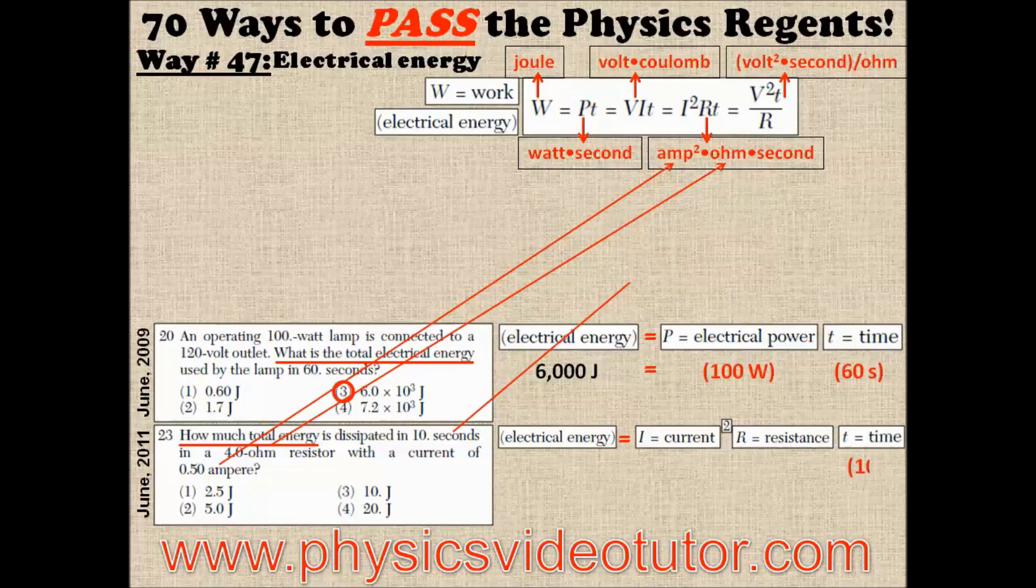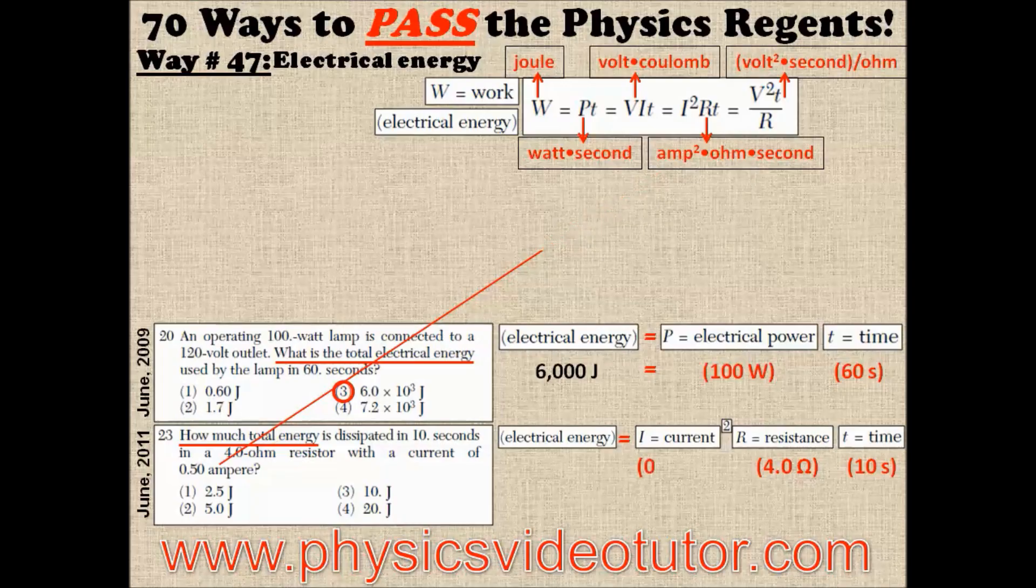The time is 10 seconds, the resistance is 4 ohms, and the current is 0.5 amps, which needs to be squared. After multiplying your numbers together, you should get 10 joules as your answer.